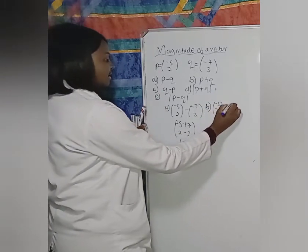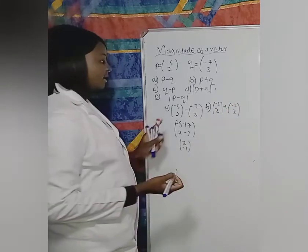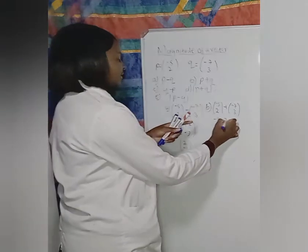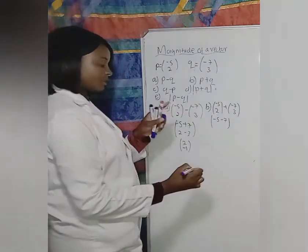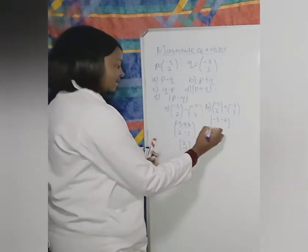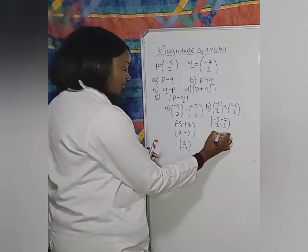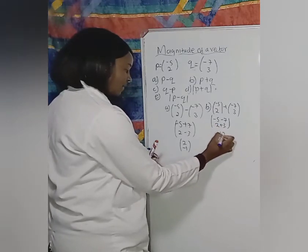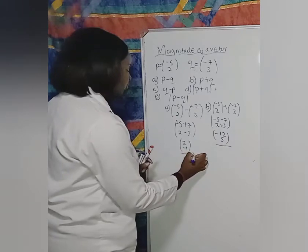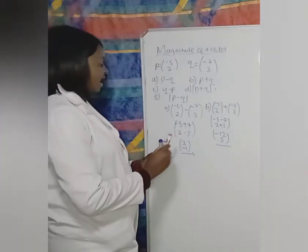For part b, P plus Q: it's (-5, 2) plus (-7, 3). Minus 5 plus minus 7 — the plus and minus together give us negative — so it becomes minus 5 minus 7, which is minus 12. And 2 plus 3 is 5. So P plus Q equals (-12, 5).